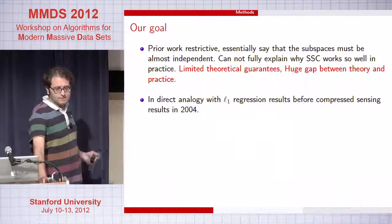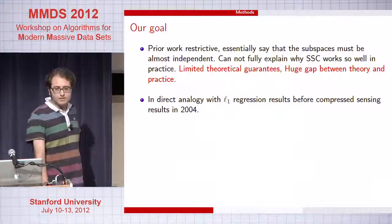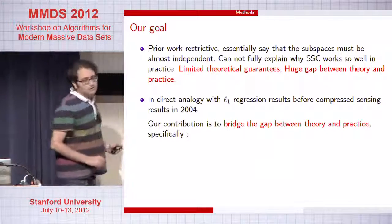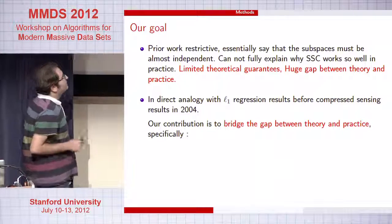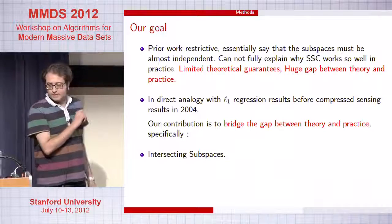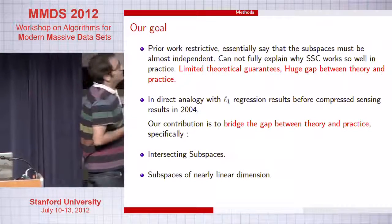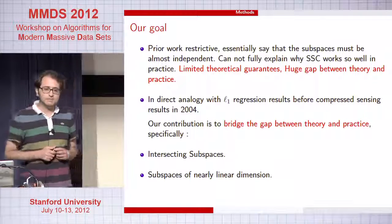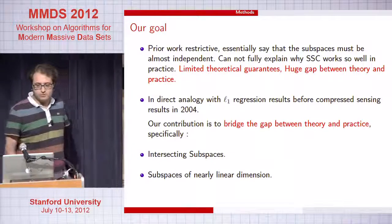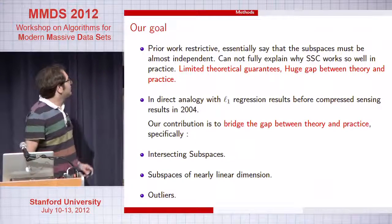The theory that exists so far could be viewed as analogous to L1 regression results before the seminal works of 2004. Our contribution is to bridge this gap. More specifically, for the first time we show that you can do perfect subspace clustering even when the subspaces intersect — not previously explained in the literature. We also show that the dimension of the subspaces can grow almost linearly with the ambient dimension, giving a factor of square root of n improvement over previous results, and that the whole process is robust to an overwhelming number of outliers.